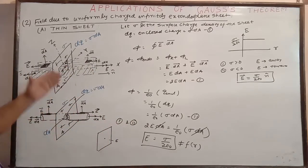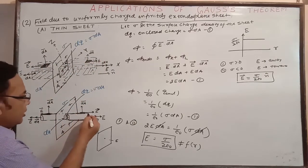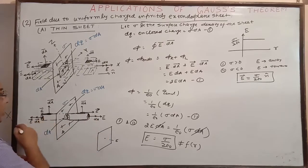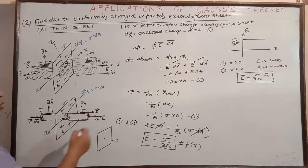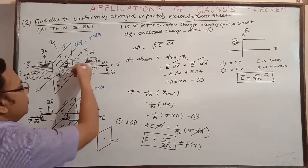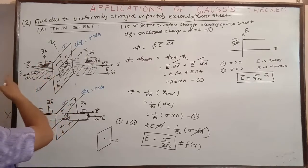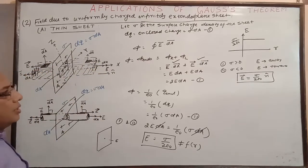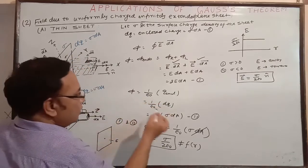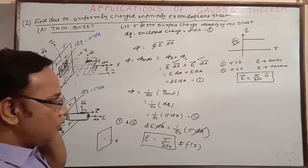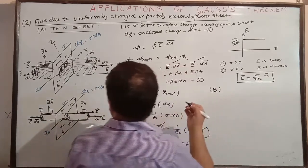To summarize: for the thin sheet, the flux is contributed by both end caps — E and dA in the same direction for both caps, giving E·dA + E·dA. For the curved part, E and dA are at 90 degrees so no contribution. All other sides — top, bottom, perpendicular sides — are not contributing. So we get 2E·dA, and with the enclosed charge sigma·dA, we arrive at E = sigma / (2 epsilon_naught) for a thin sheet.